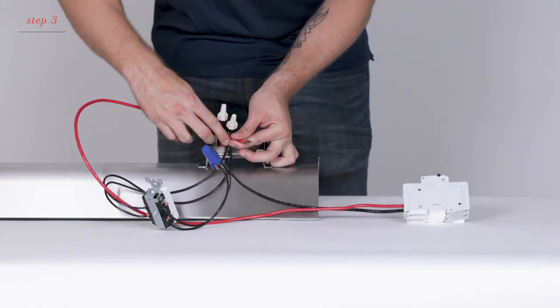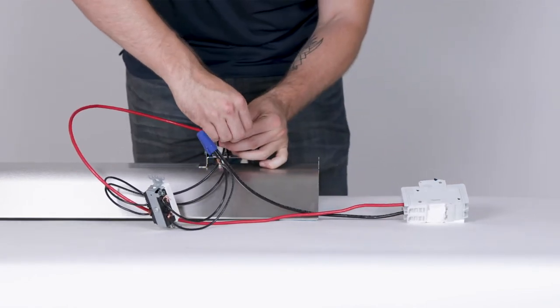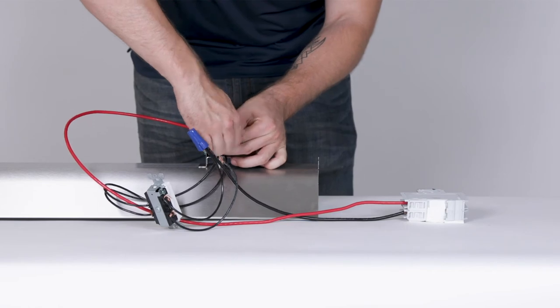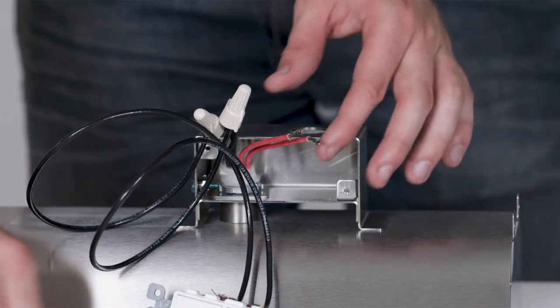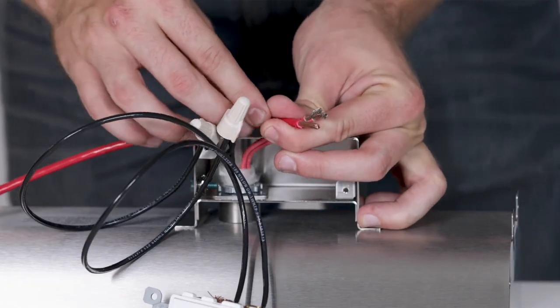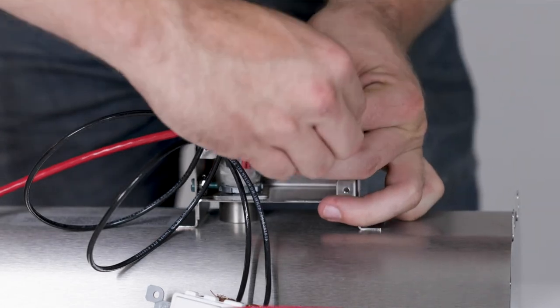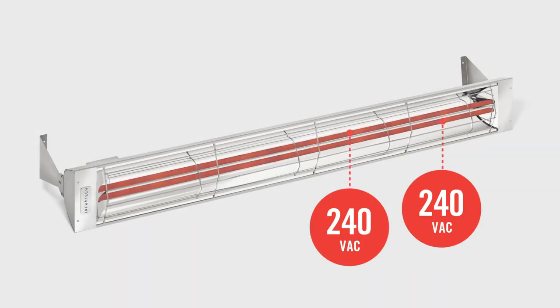Now, line 2 of the circuit goes directly to the heaters. You will terminate line 2 on the two red wires in the heater or the high temperature flex whip depending on how you are mounting the heater. After you connect your ground to the heater, the installation is complete.